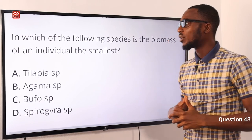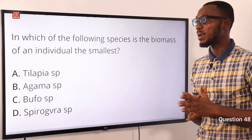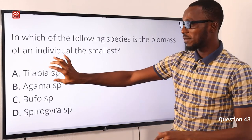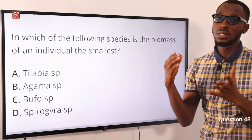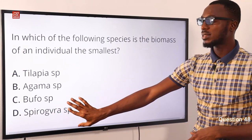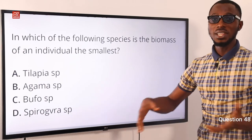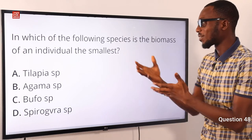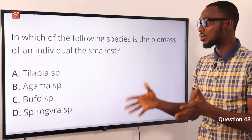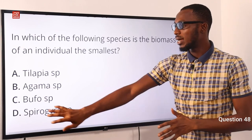Number 48. In which of the following species is the biomass of an individual the smallest? Biomass refers to the total quantity or mass of a particular organism in a given area. The options include tilapia fish, agama lizard, buffalo, frog or toad, and spirogyra. Spirogyra is a thallophyte belonging to the phylum Thallophyta under the plant kingdom — it is a green alga. Its total mass or biomass should be the smallest in comparison to the other organisms listed. The correct option is option D for spirogyra.